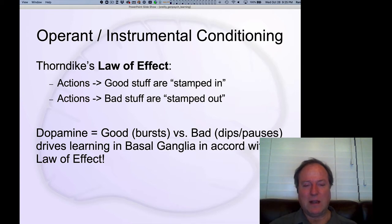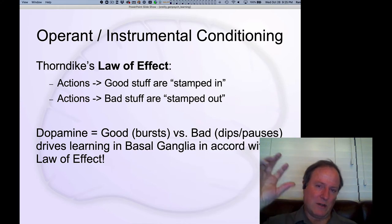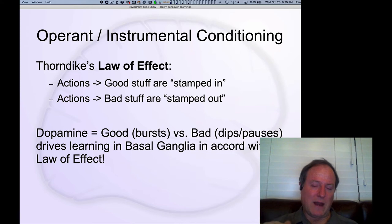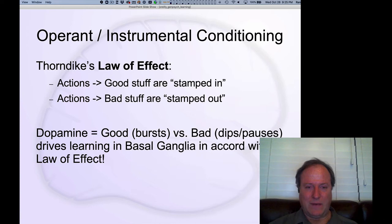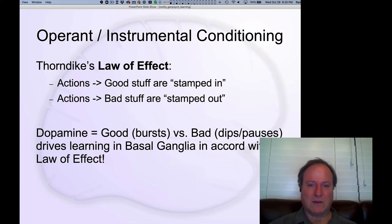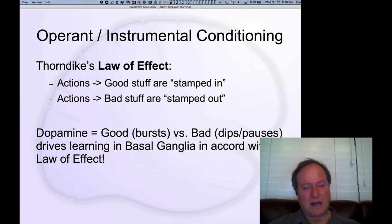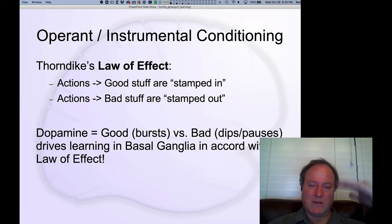We can actually understand the very detailed neural basis of how this learning works in terms of the effects of dopamine bursts — those little increases in dopamine — or dips according to bad outcomes, those pauses, and how that drives learning in the basal ganglia. This law of effect can be understood right down at the level of the circuitry in the brain, and in particular the ability of the basal ganglia to decide what to do next and what not to do under the influence of these dopamine signals.